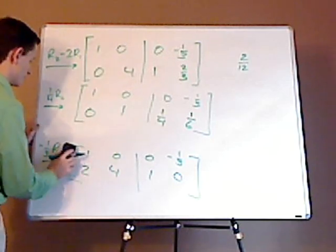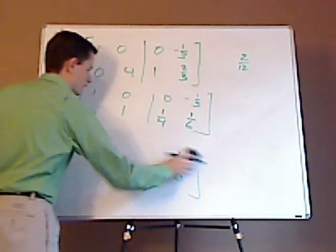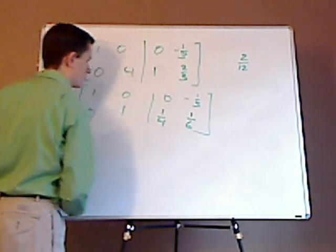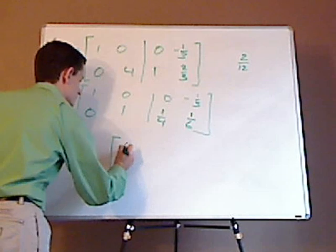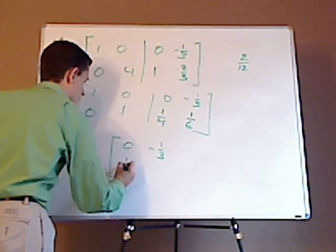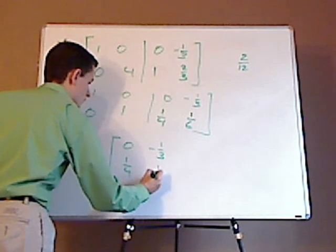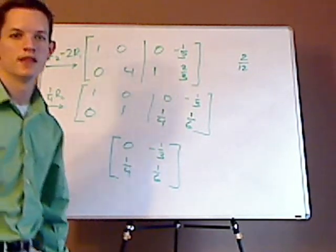So, the inverse matrix, the multiplicative inverse matrix, is going to be zero, negative one-third, one-fourth, one-sixth. And that's it.